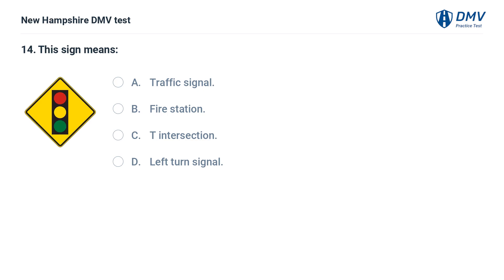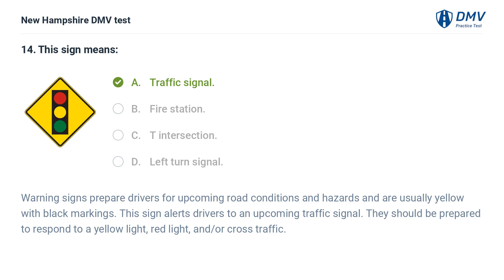This sign means: A) traffic signal, B) fire station, C) T-intersection, D) left turn signal. The answer is A, traffic signal. Warning signs prepare drivers for upcoming road conditions and hazards and are usually yellow with black markings. This sign alerts drivers to an upcoming traffic signal — they should be prepared to respond to a yellow light, red light, and/or cross traffic.